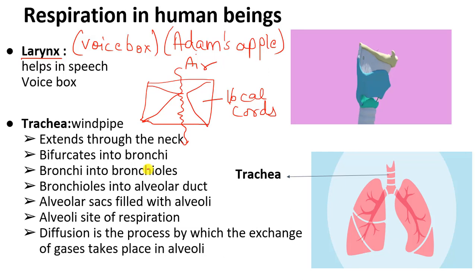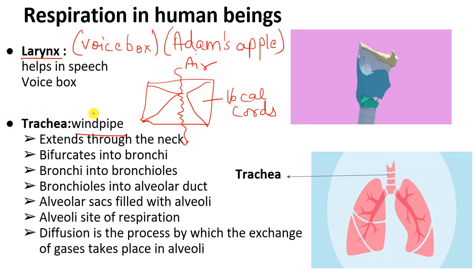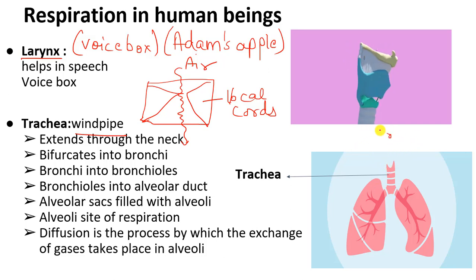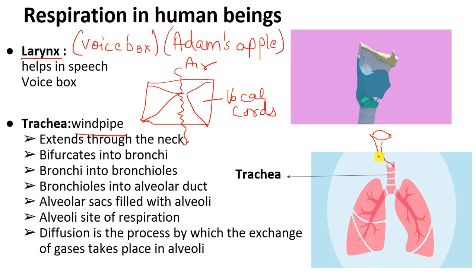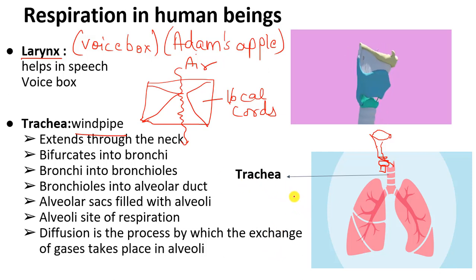After the larynx, you have a very important structure — the trachea, the wind pipe. As biology students, we should call it trachea. The trachea is present in the neck region. So the full pathway is: nose, nasal cavity, then pharynx, then epiglottis and glottis, then the vocal cords, and then this pipe in the neck region — the trachea.